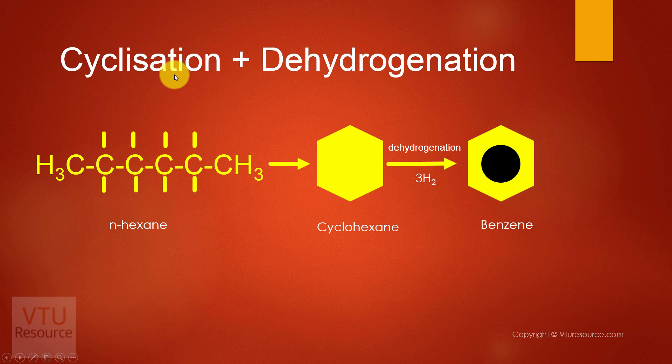So the cyclohexane, as you have seen in the octane number table, has more octane rating compared to branched chain hydrocarbons. Next, cyclization and dehydrogenation. So in this process straight chain hydrocarbons after cyclization and dehydrogenation give rise to aromatic hydrocarbons.